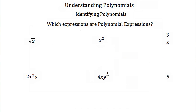So now that we know what a polynomial is, let's see if we can identify some. Which of these expressions are polynomial expressions? The first one, we have the square root of x. I can rewrite the square root of x as x to the one half. And this one half exponent is not a whole number. Remember, monomials and polynomials only have whole number exponents. So since this is x to the one half, or the square root of x, this is not a polynomial expression.